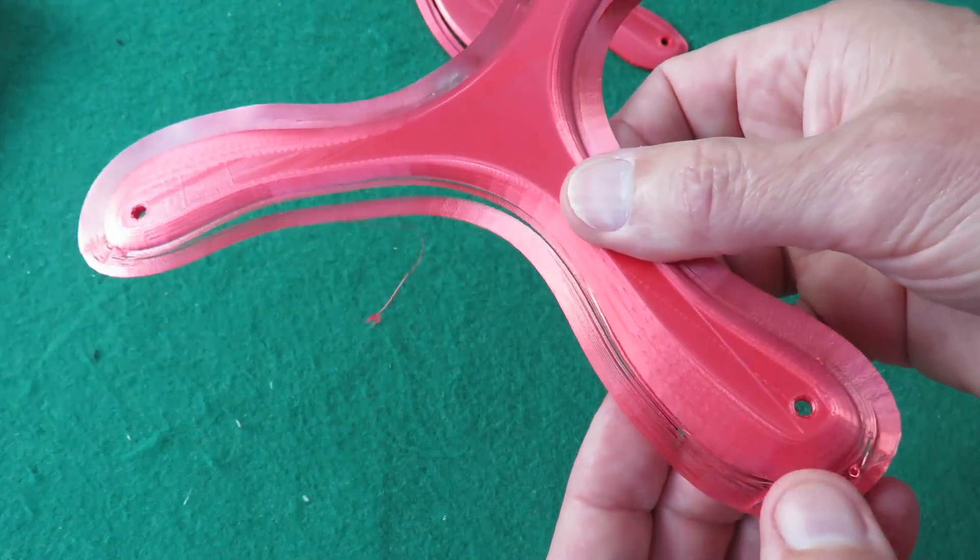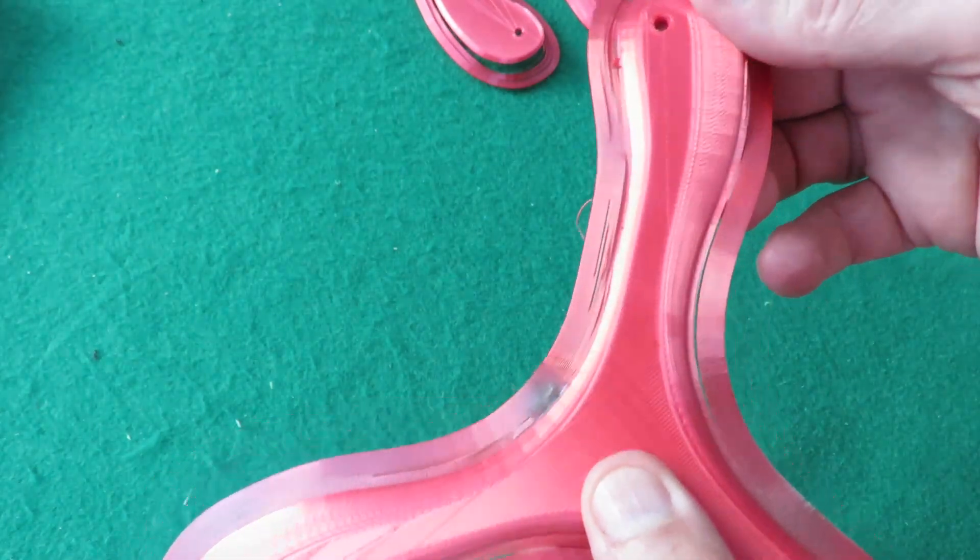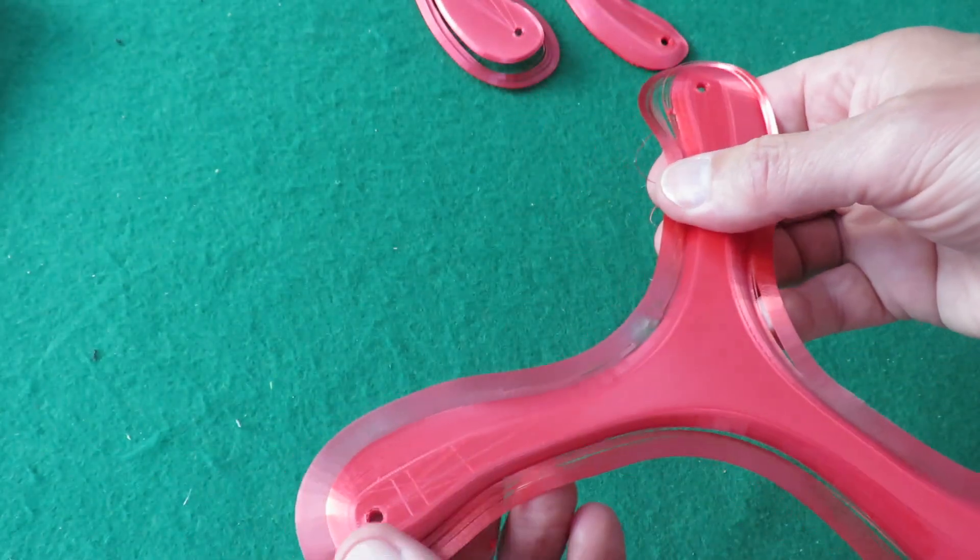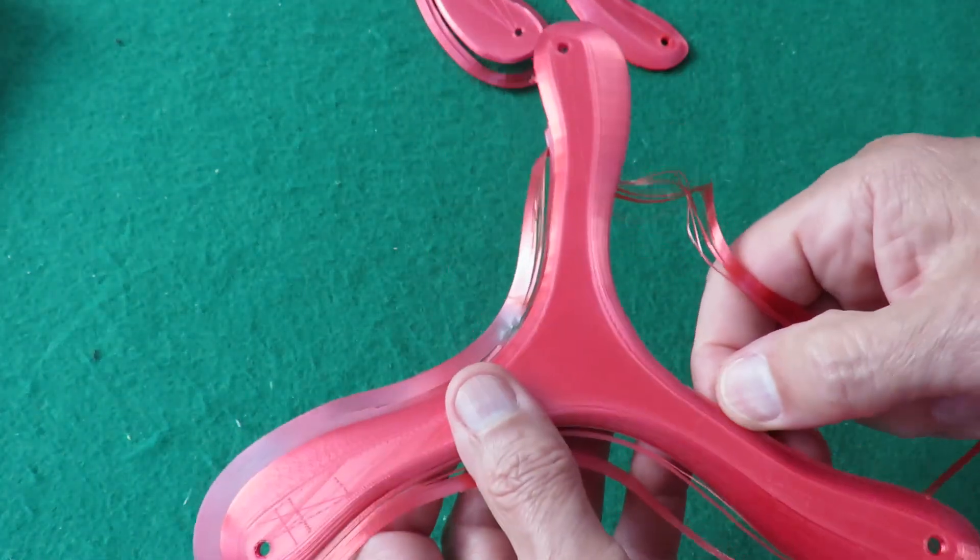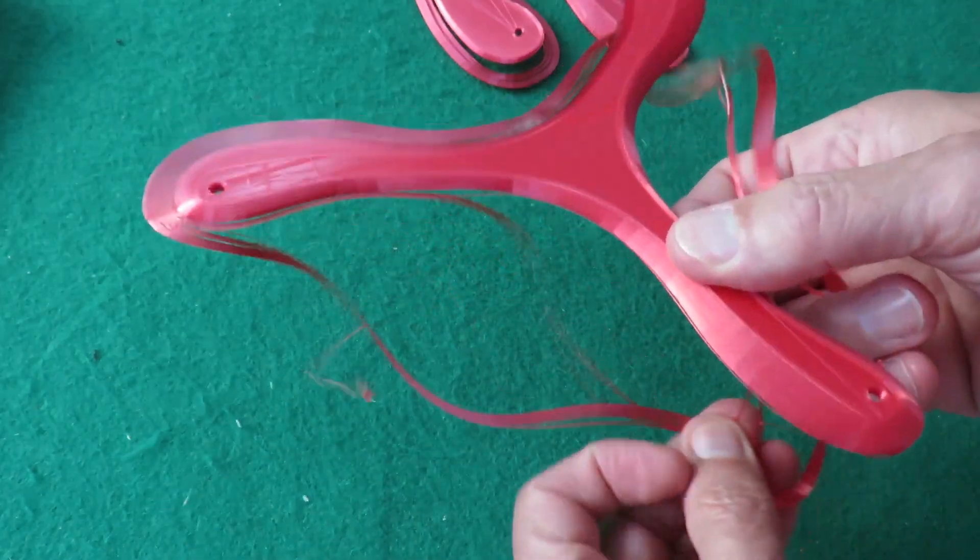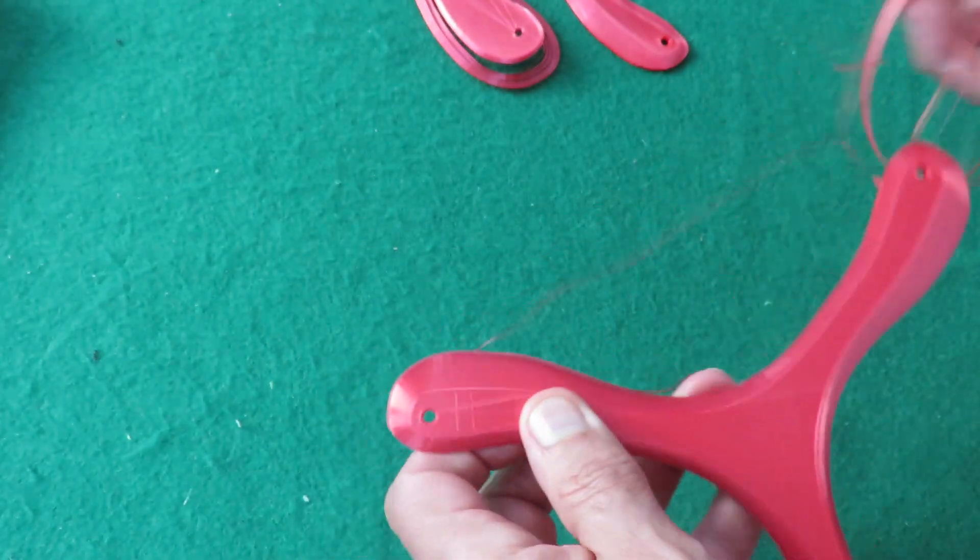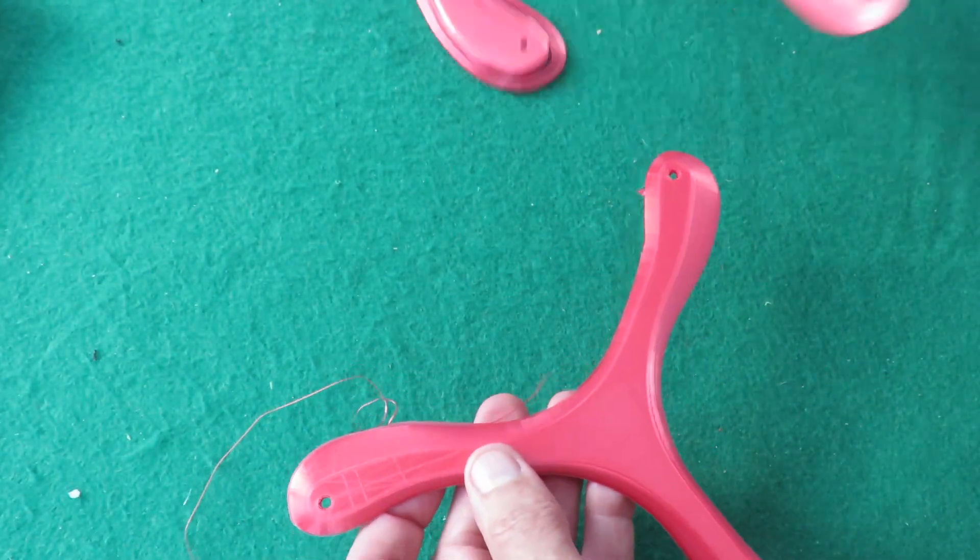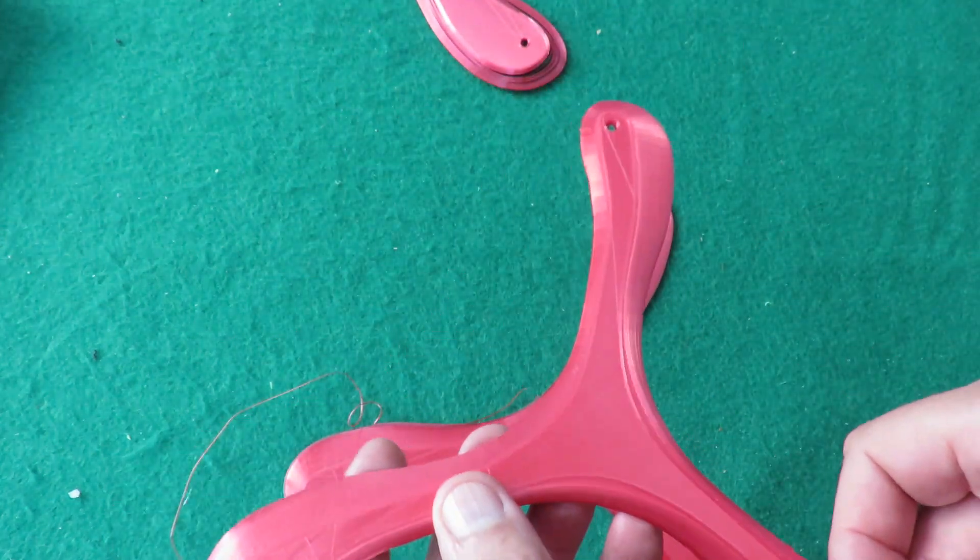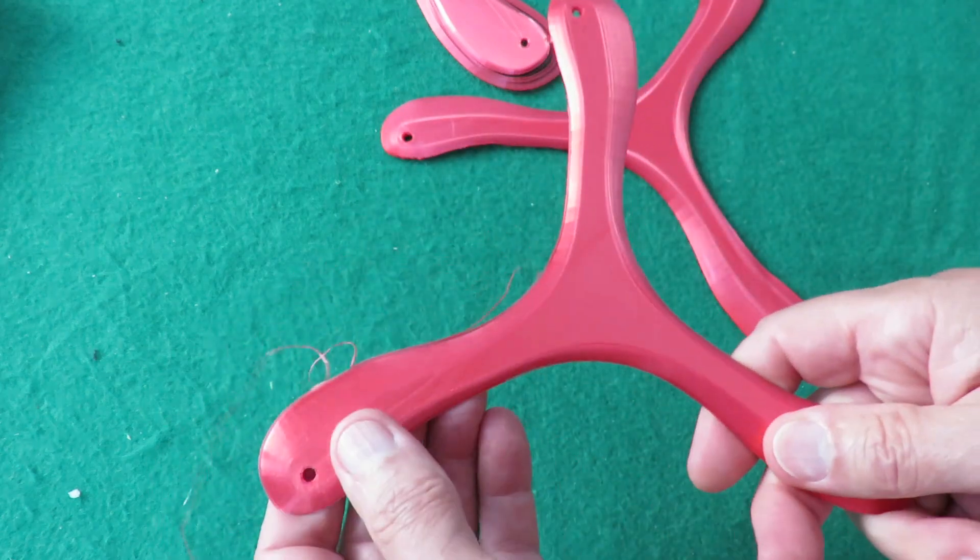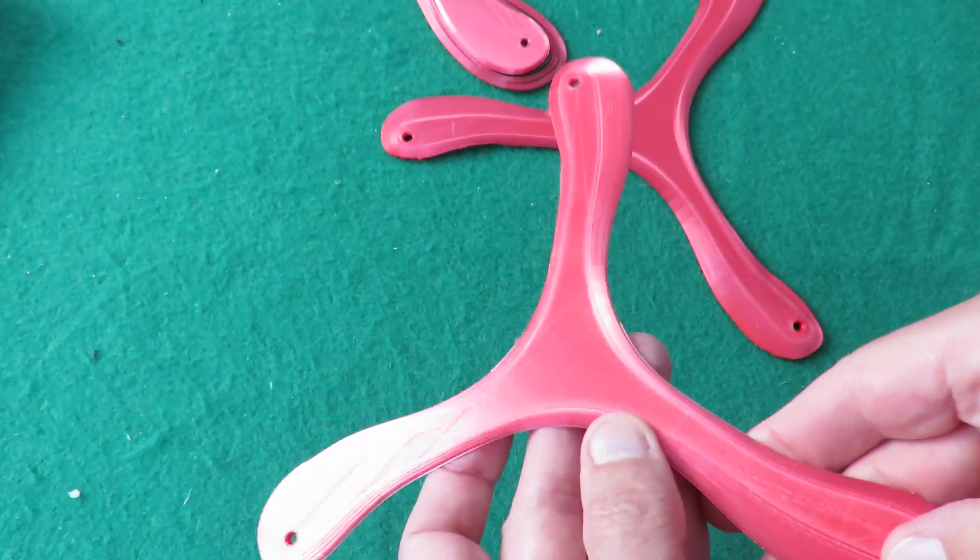But yeah, this is printed with a brim to try and hold it down. And that has turned out fairly well. And that one looks like it's flyable without any modification. Well, maybe a bit of trimming around the edges. But that one, I had to heat it to flatten it down. Notice that one looks okay, a little bit of trimming there, and that should be okay.